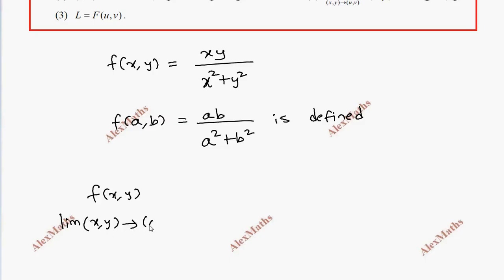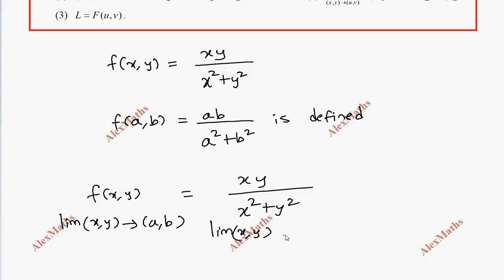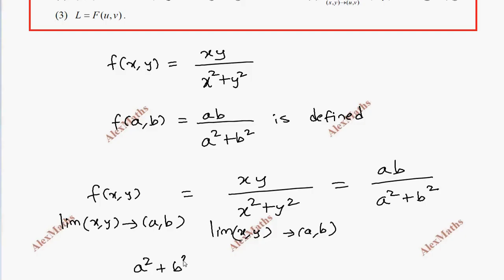For a general point (a, b), the function is f(x,y) = xy/(x²+y²). We evaluate the limit as (x,y) tends to (a,b), which gives ab/(a²+b²), where the denominator a²+b² is not equal to zero.